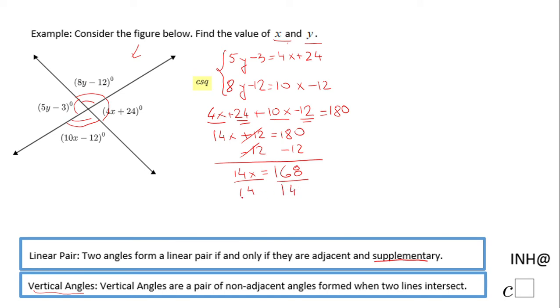Both sides, and we end up with x of 12. So we find x. We need to find y. How are we going to find y? Now we're going to use a similar approach, just two different angles.